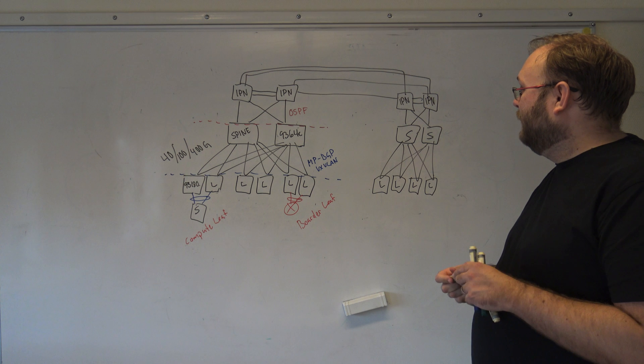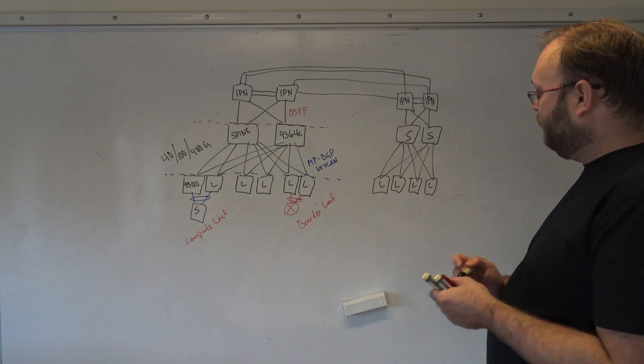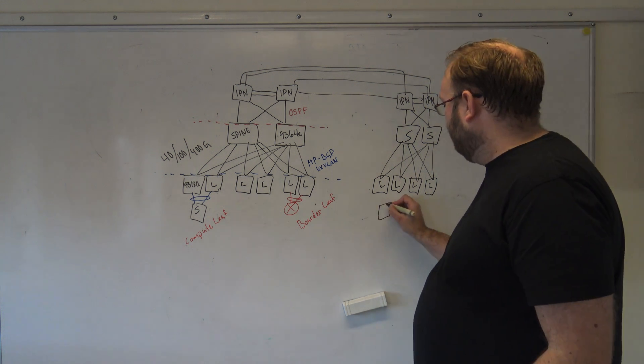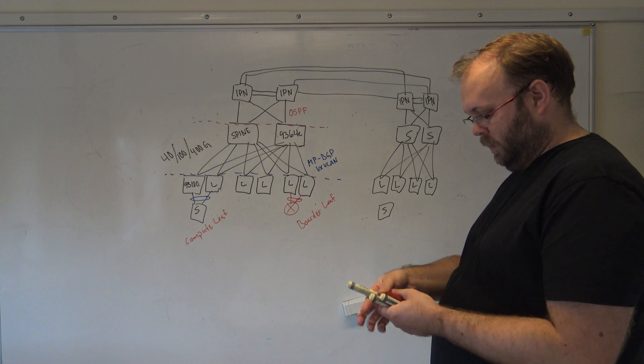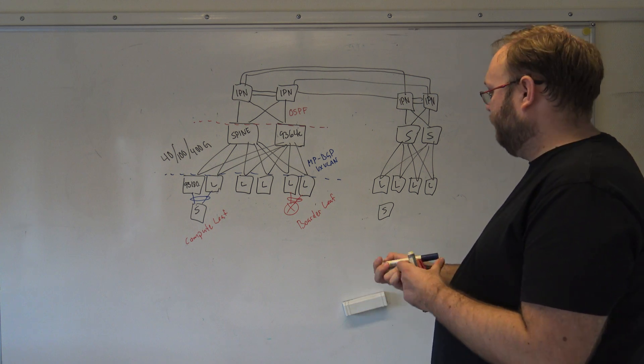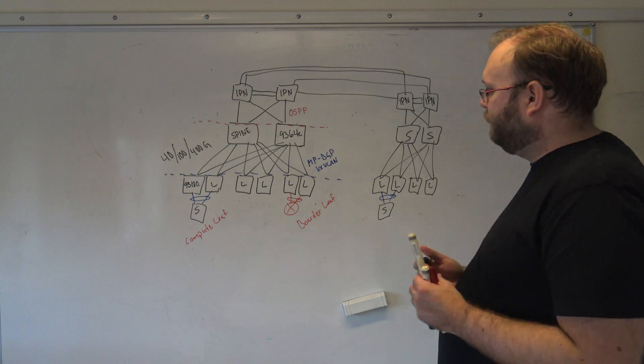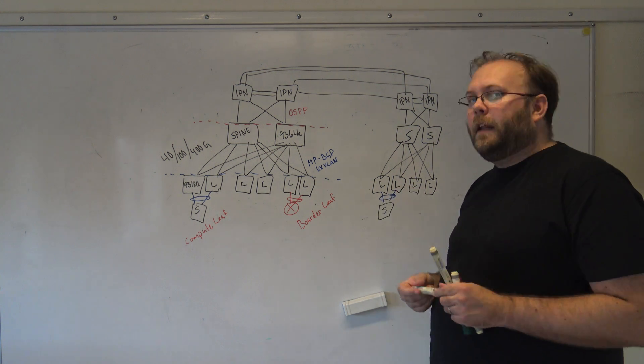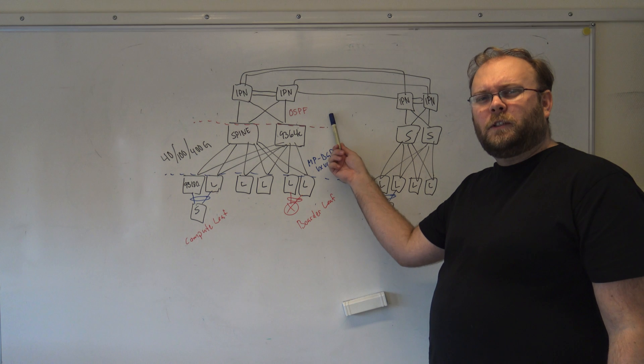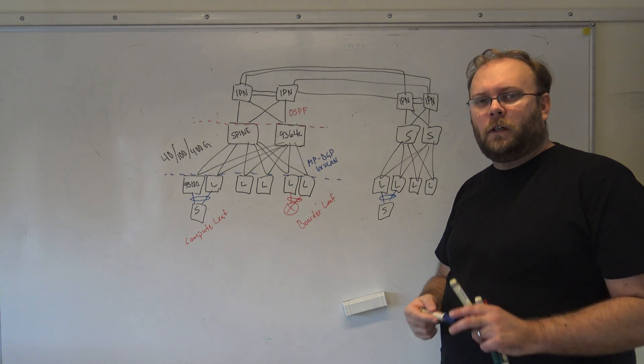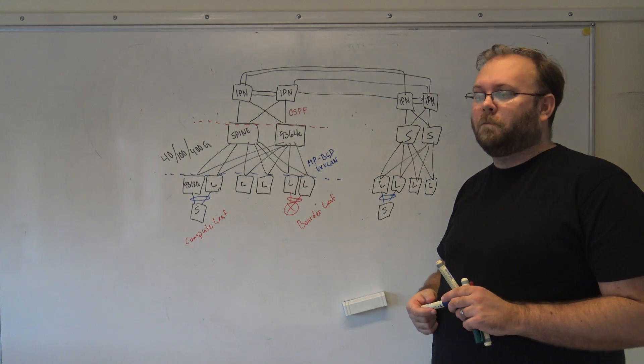So if you have your server here connected with your 25 gigs, and then you see we have OSPF, we have BGP and so on. So it must be layer 3?